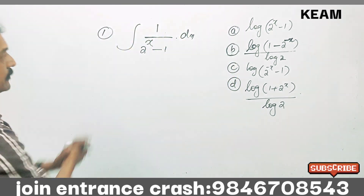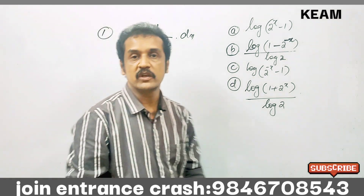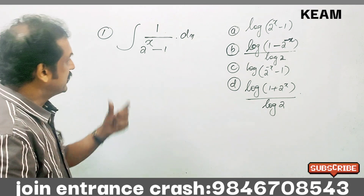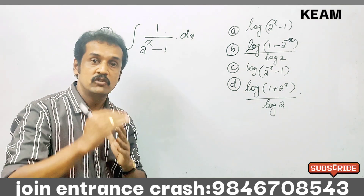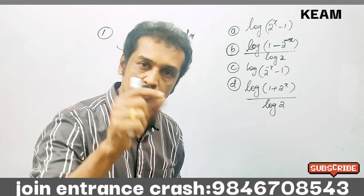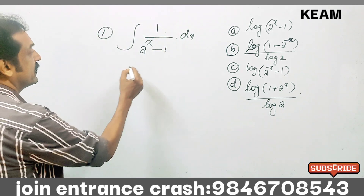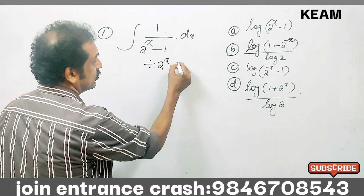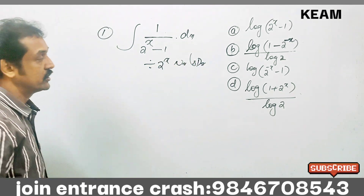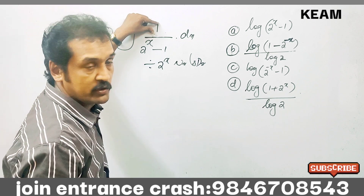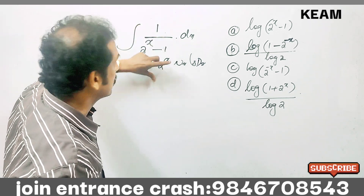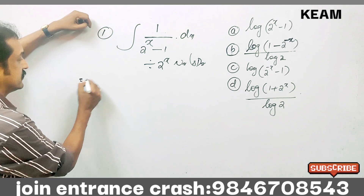This is the first question: the integral of 1 divided by (2 raised to x minus 1) dx. Let's take a look at this type involving 1/(2^x) and e^x. This is a common method of dividing by 2^x on the numerator and denominator.